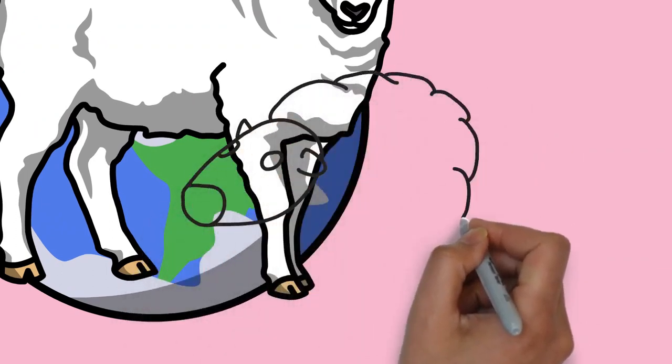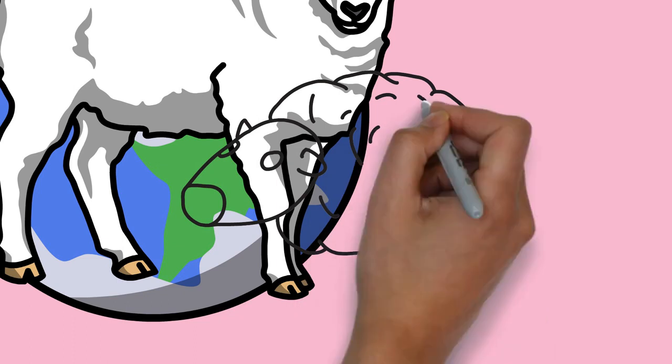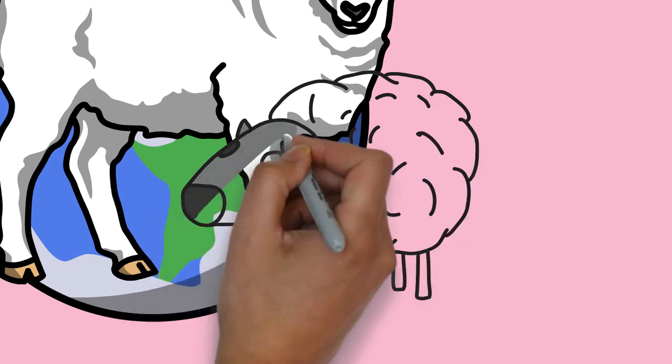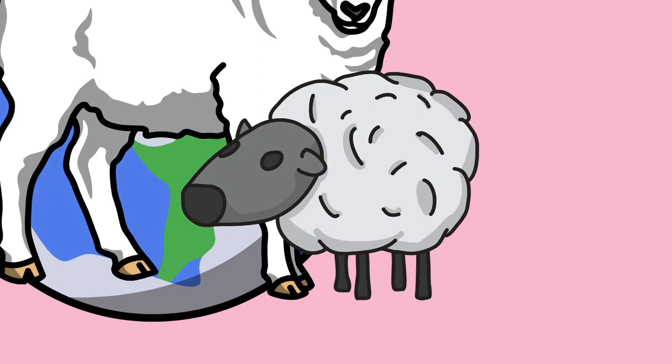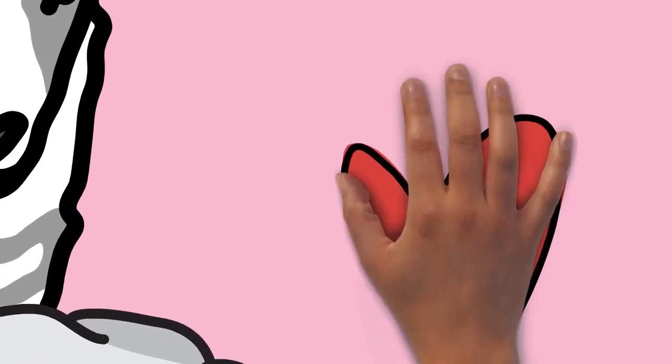Sheep are most likely descended from the wild mouflon of Europe and Asia, with Iran being a geographic envelope of the domestication center. One of the earliest animals to be domesticated for agricultural purposes, sheep are raised for fleeces, meat, lamb, hogget, or mutton, and milk.